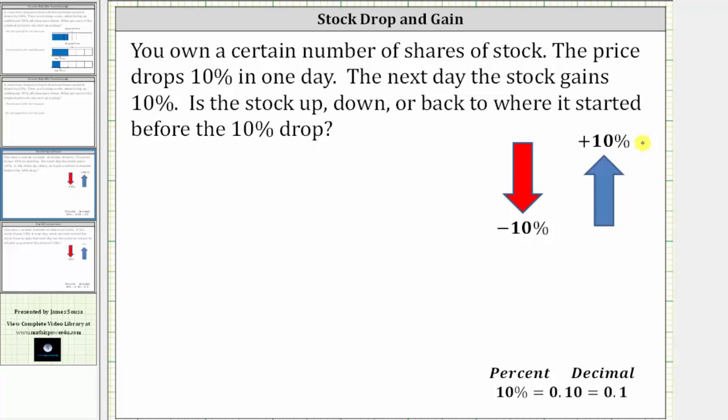Let's just say the stock price is $100. If the stock price drops 10% to find the new price, we would take $100 and then subtract 10% of $100. To find 10% of $100, we convert the percent to a decimal and multiply.